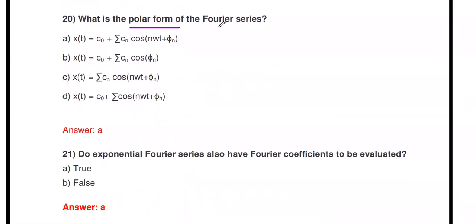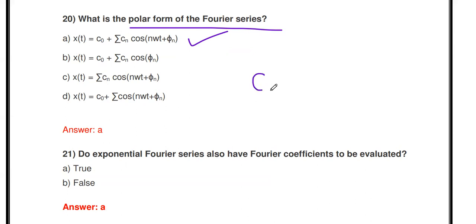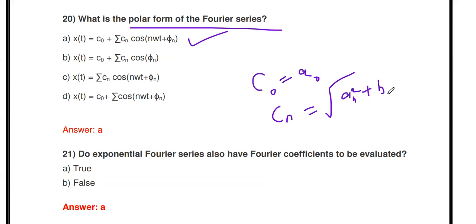Next question: What is the polar form of the Fourier Series? The Polar (Cosine) Fourier Series formula is: x(t) = c₀ + Σ cₙ cos(nωt + φₙ). Here c₀ corresponds to a₀ in the trigonometric form. The coefficient cₙ is calculated as: cₙ = √(aₙ² + bₙ²) — that is, the square root of aₙ squared plus bₙ squared.